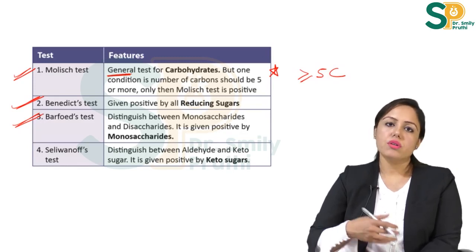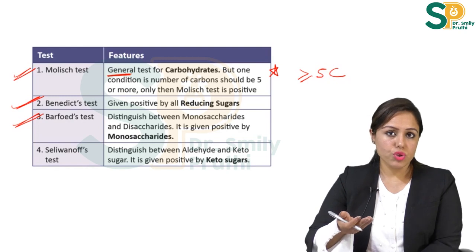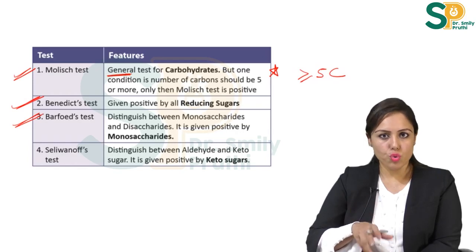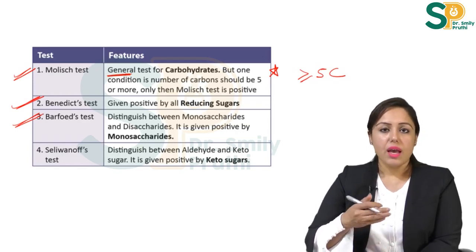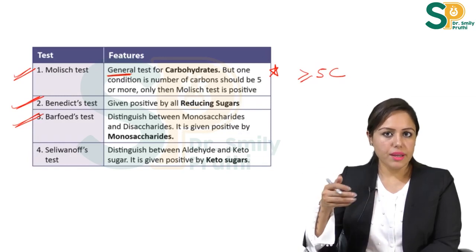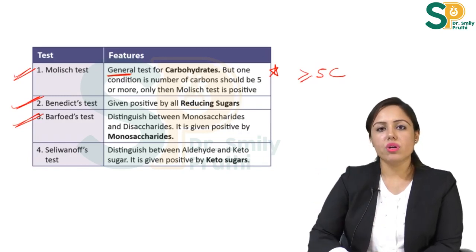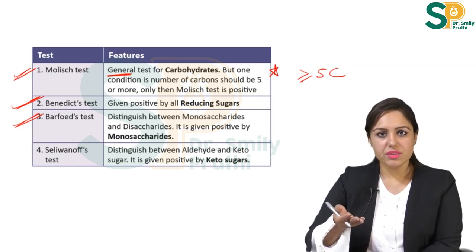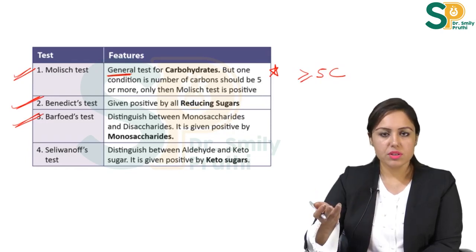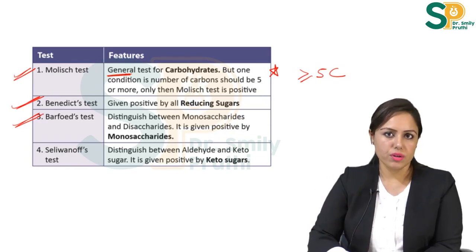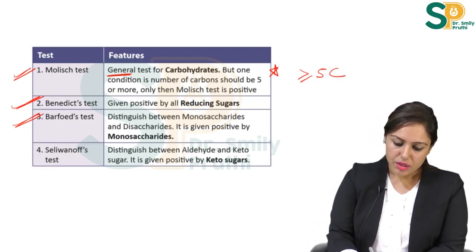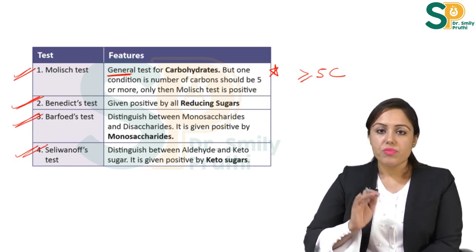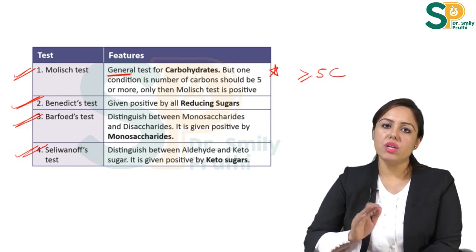Third is Barfoed's test, which can distinguish between monosaccharides and disaccharides. When we heat the solution, if red colored precipitates appear within the first two minutes, it is a monosaccharide. If you do prolonged heating till eight to ten minutes, disaccharides will also give a red color. So Barfoed's test distinguishes between them by heating for only two minutes — if color comes, it is a monosaccharide.